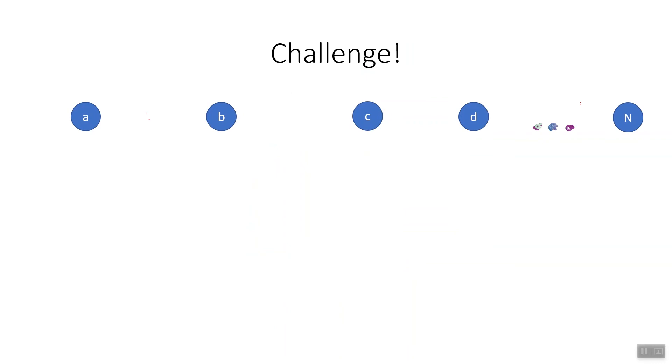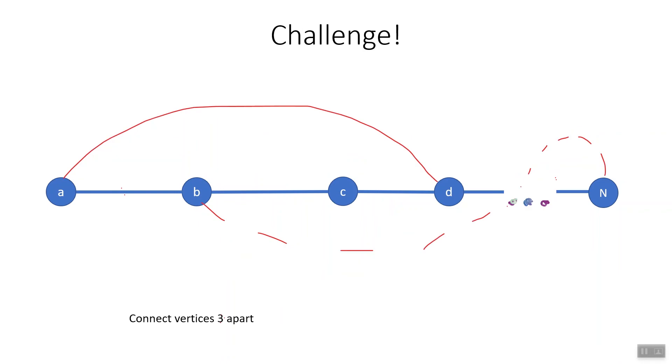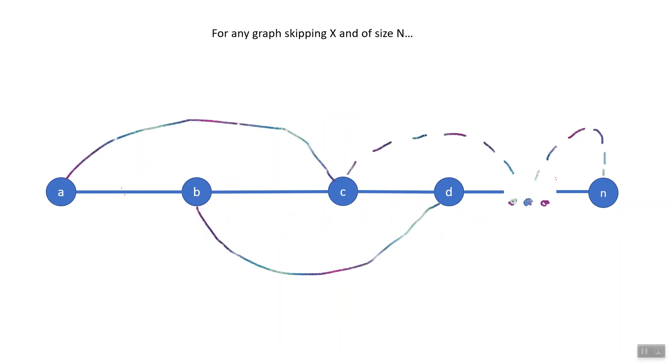Now for a challenge to close the video. Consider the following type of graph. We'll start with a line of vertices like this, and connect each one to the next, like that. Let's call this our base graph. Then consider this graph. We started with the same line of vertices connecting each one to the next, except we will now also connect each vertex to the one two down the line. We could call this a skip two. We could have also chosen to start with the base graph and add connections between vertices that are three edges apart. Now, my challenge for you is for any graph skipping x and of size n, what is the distance between the first and last vertex? And perhaps a little harder, what is the diameter of any given skip x graph of size n?